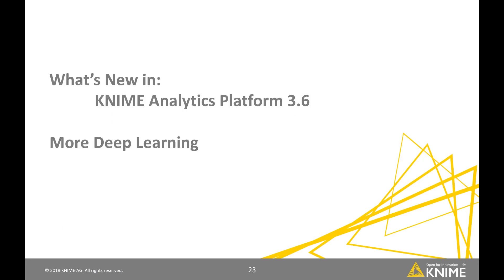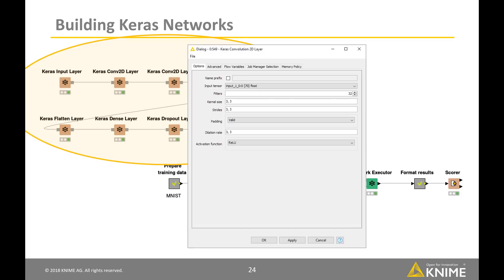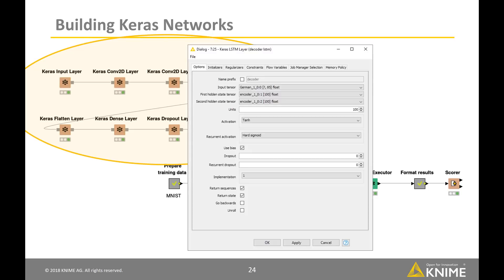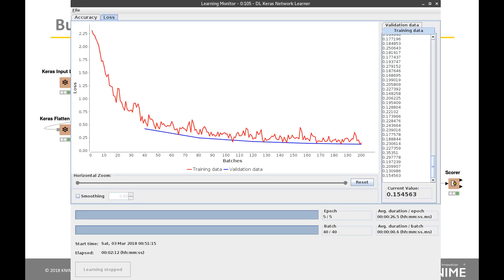Now let's look at what's new in deep learning. We can now set up deep network architectures without writing a single line of code. Keras is a high-level neural networks API written in Python, capable of running on top of TensorFlow, for example. The Keras Convolution 2D layer configuration allows defining input tensor, kernel size, strides and more. Similarly, the Keras LSTM layer configuration node allows defining input tensor, first and second hidden state tensors, and so on. The DL Keras Network Learner node lets you monitor the learning rate with either the loss function or accuracy.